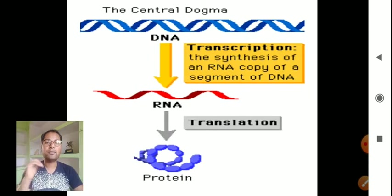The central dogma of life: DNA after transcription converts into RNA. In transcription, the synthesis of an RNA copy of a segment of DNA is produced. Upon translation of RNA, protein is synthesized and protein is folded.